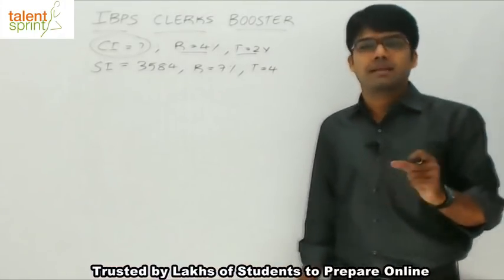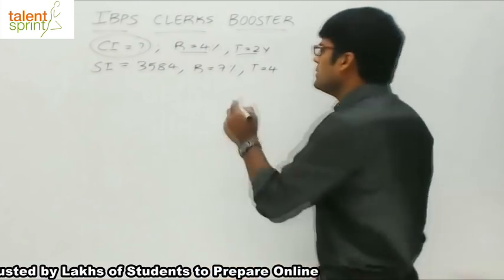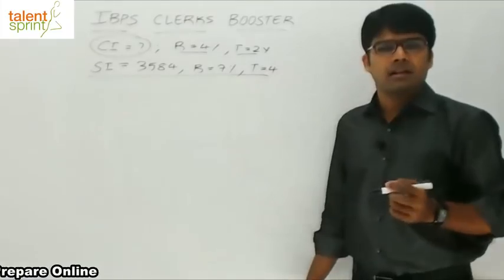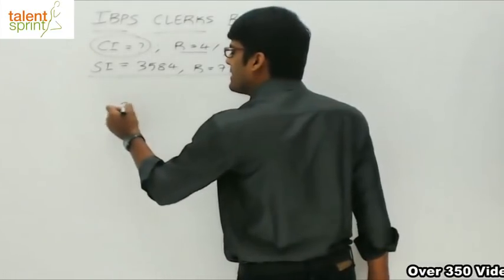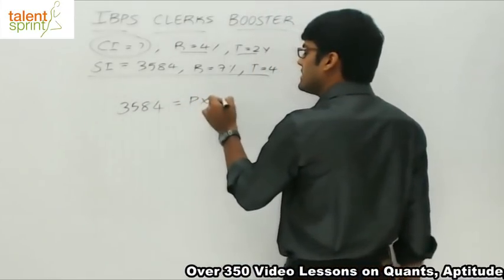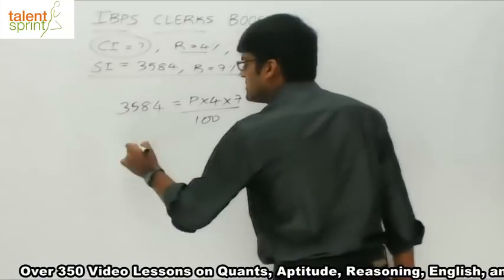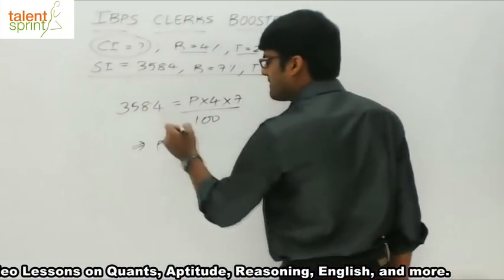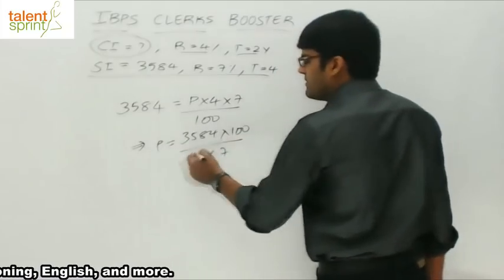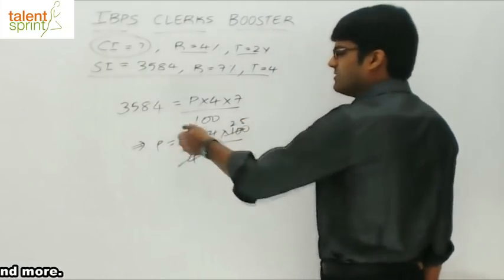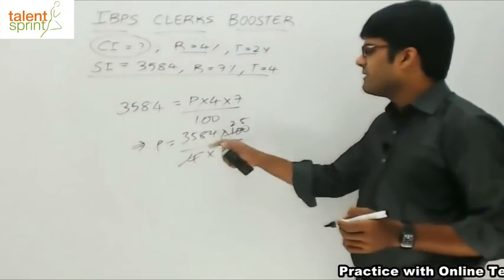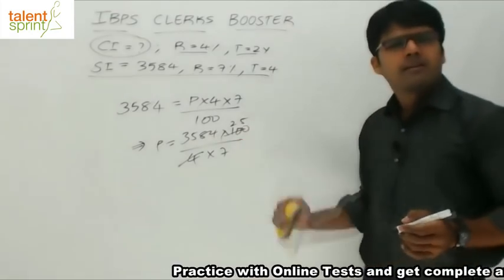So what do we do first? We will first try to calculate the principle amount. How can that be done? Using these three values. SI is given, R is given and T is given. Calculate the principle. You know that SI equals to PTR by 100. So we will say 3584 equals to P into T, that is 4 years into R, 7 by 100. From this, you will calculate the principle amount. That is 3584 into 100 divided by 4 into 7. Maybe you will cancel this 25 times and you will do the cancellation with 7 there, which will be about 512. 512 into 25 will give you the principle.